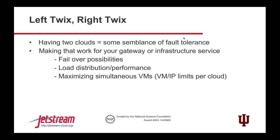Using both clouds provides some semblance of fault tolerance — you can do load and performance distribution. If you have things that figure out your closest host, they could use both sides, talk to each other, and replicate as needed.